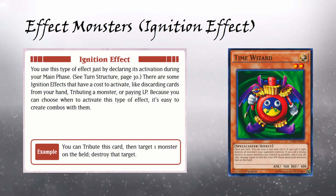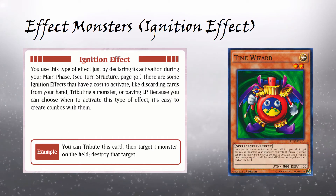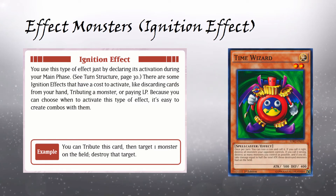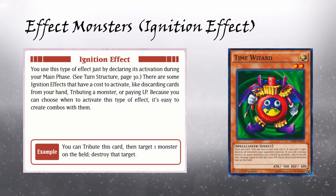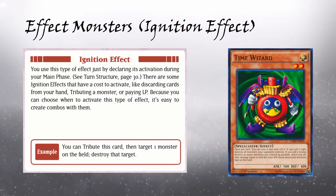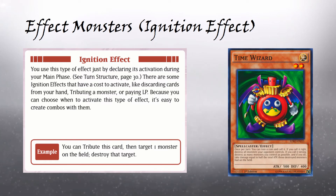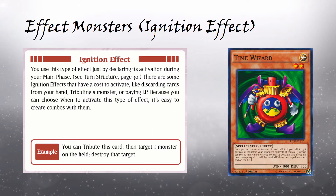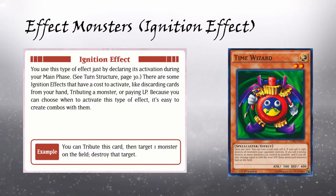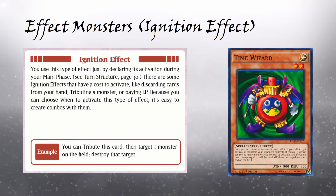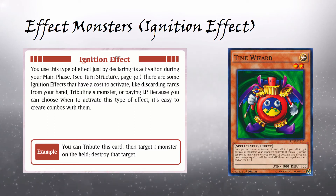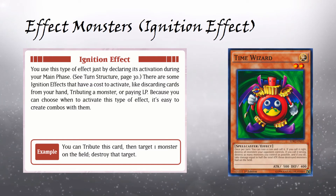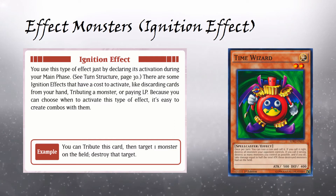Next up we have the Ignition Effect. You use this type of effect just by declaring its activation during your main phase. There are some ignition effects that have a cost to activate, like discarding cards from your hand, tributing a monster, or paying life points. Because you can choose when to activate this type of effect, it's easy to create combos with them. The main point of this type of effect is that you choose whether you would like to activate the effect or not. Let's look at Time Wizard. Its effect reads: Once per turn, you can toss a coin and call it. If you call it right, destroy all monsters your opponent controls. If you call it wrong, destroy as many monsters you control as possible, and if you do, take damage equal to half the total attack those destroyed monsters had on the field. Time Wizard is quite the gamble that can result in either a major advantage or a major disadvantage. However, since it's an ignition effect, you choose whether you'd like to take that gamble or not.